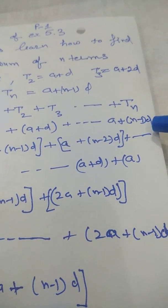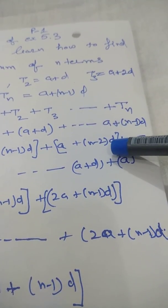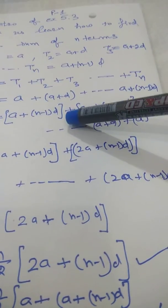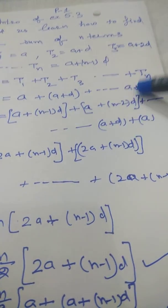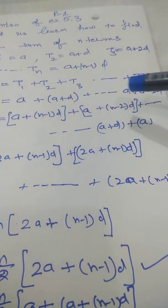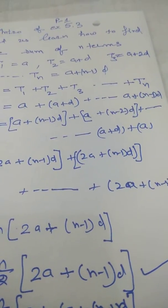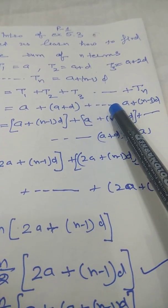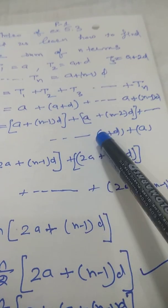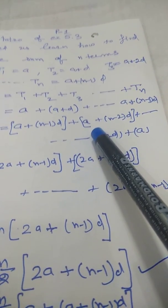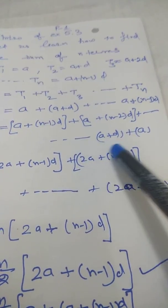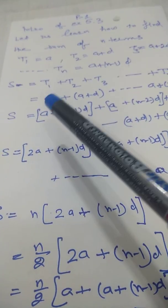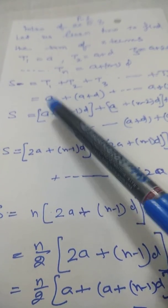The last term tn equals a + (n-1)d. Now we write S in reverse order: the last term becomes first, so S = [a + (n-1)d] + [a + (n-2)d] + ... + (a + d) + a. Now we add the forward and reverse expressions for S together on the left-hand side to get 2S.